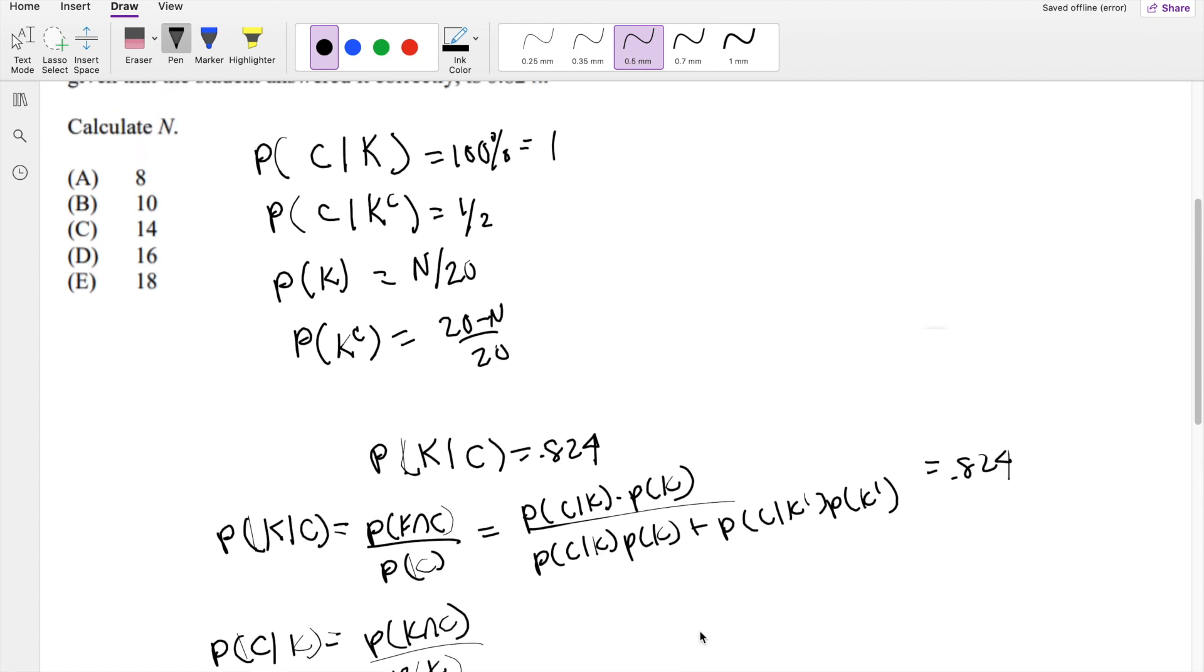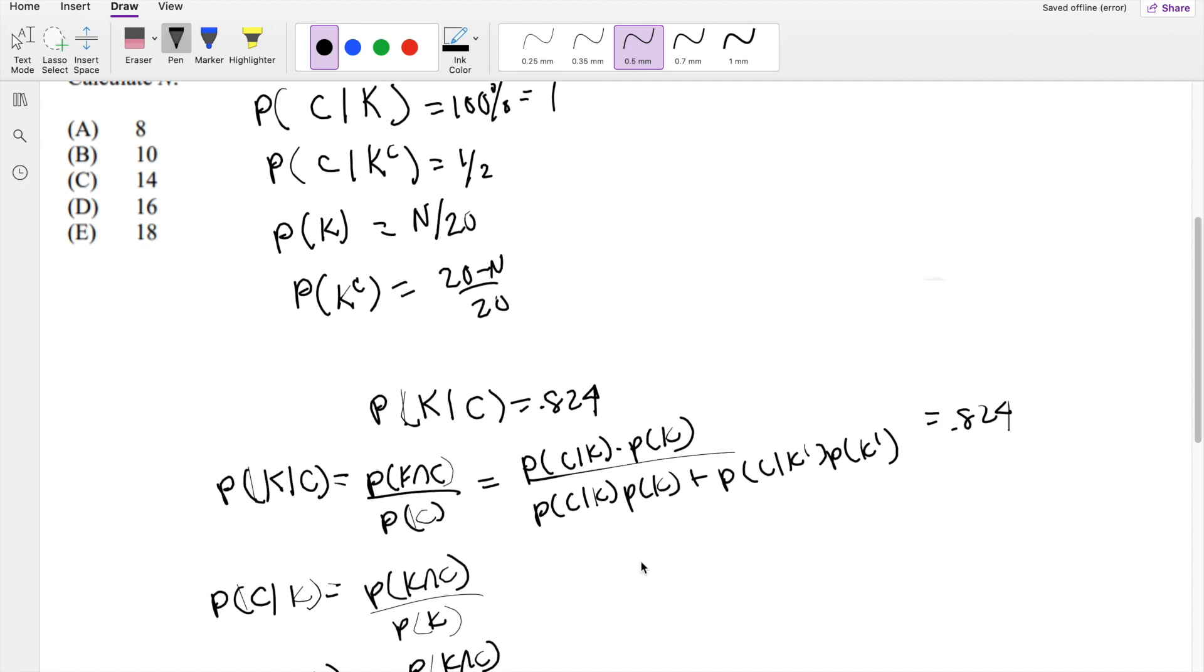So what is P(C|K)? That's exactly just 1. And what's P(K)? That's N over 20. In the denominator, you have the same thing, 1 times N over 20 plus P(C|not K). So that's 1 half times P(not K). So that's basically just 20 minus N over 20.